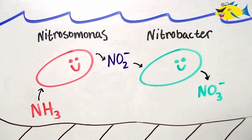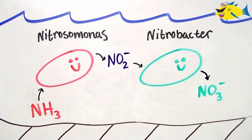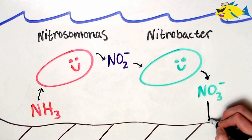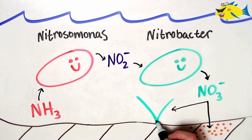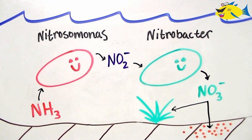This fully oxidized form of nitrogen is then released and free to travel throughout our aquarium, where it can be used as a substrate in a process called denitrification, or used by plants for nitrogen assimilation. We highlight both of these processes in other videos.